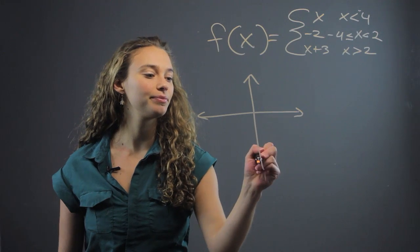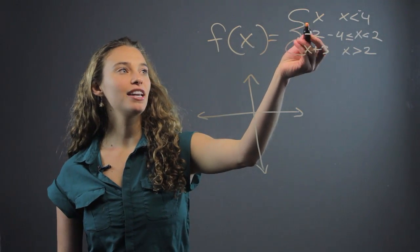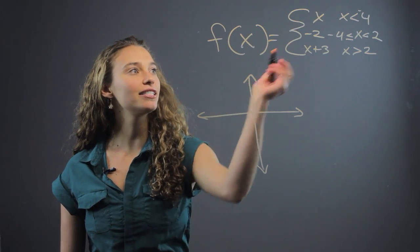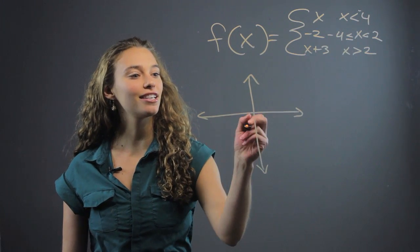So here's our graph. So let's start with the first one, f of x equals x. So that's going to be a line kind of like this, but it's only when x is less than four.